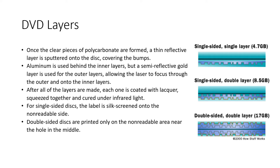For a single sided disc, the label is silk screened onto the non-readable side. For a double sided disc, printing is only on a non-readable area near the hole in the middle. You can see the cross section of the various types of completed DVDs in the figure.